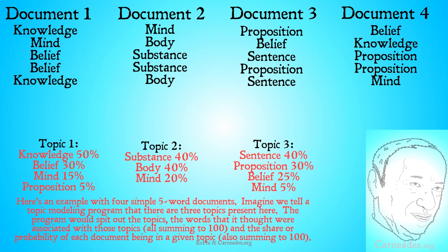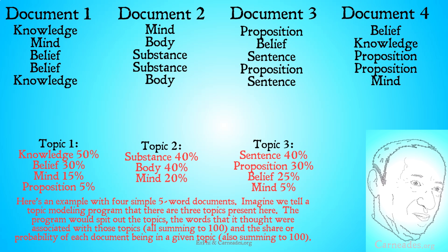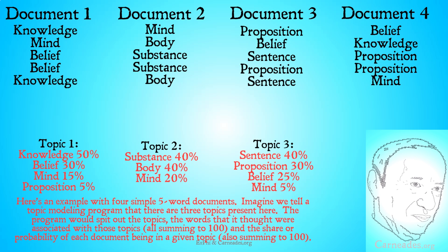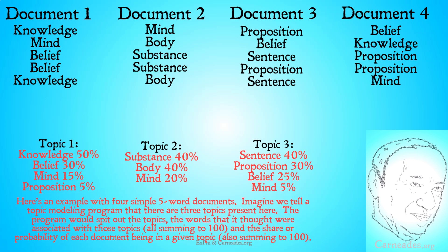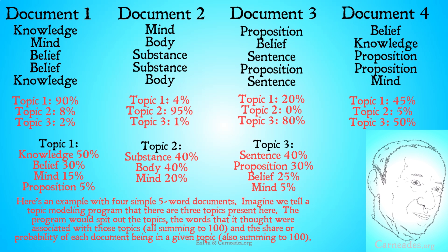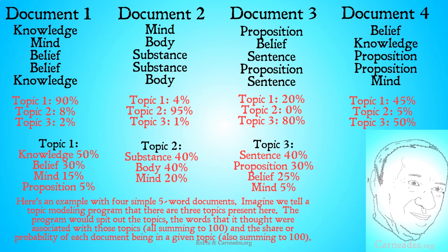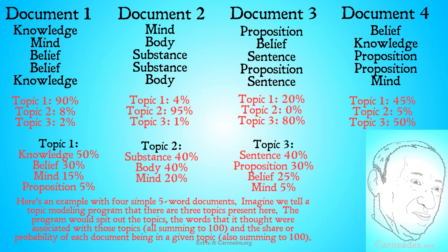The program outputs: Topic one — most common word is 'knowledge', then 'belief', then 'mind', then 'proposition'. As the human interpreter, we might say that sounds a lot like epistemology. Topic two — 'substance' is most common, then 'body', then 'mind'. That might sound like metaphysics. Topic three — 'sentence' and 'proposition' are most common, followed by 'belief' and 'mind'. That probably sounds like philosophy of language. The system also outputs the percentage of each document in those topics: document one is 90% topic one, strongly epistemology; document two is 95% topic two, pretty strongly metaphysics; and so on. You use your interpretive skills to make sense of these results.